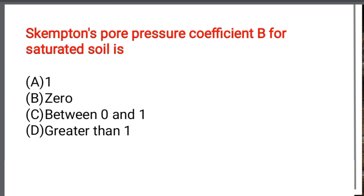Next question: Skempton's pore pressure coefficient B for saturated soil is — Option A: 1. Option B: 0. Option C: Between 0 and 1. Option D: Greater than 1. The correct answer is Option A: 1.